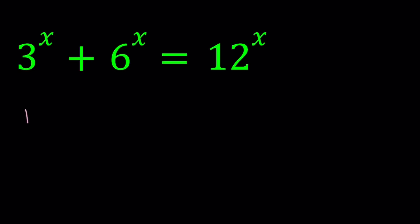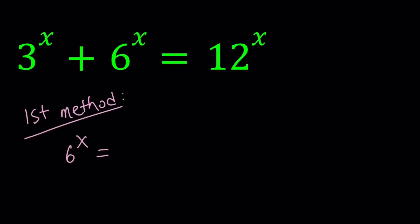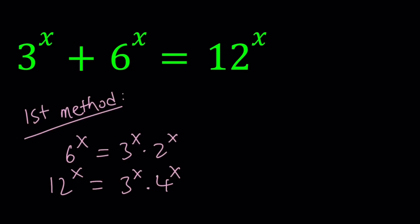First method. I'm going to go ahead and notice that 3 to the power x is a common factor. Because 6 to the power x can be written as 3 to the power x times 2 to the power x, and 12 to the power x can be written as 3 to the power x times 4 to the power x. Since 12 is 3 times 4 and 6 is 3 times 2, that gives us a common factor which is 3 to the power x. Let's go ahead and factor this expression.